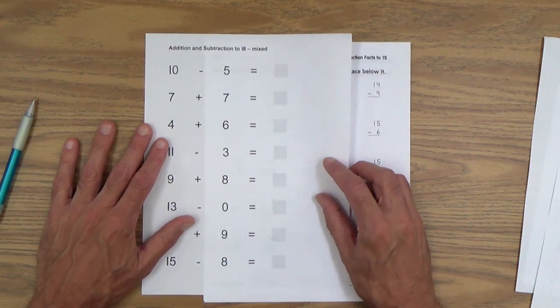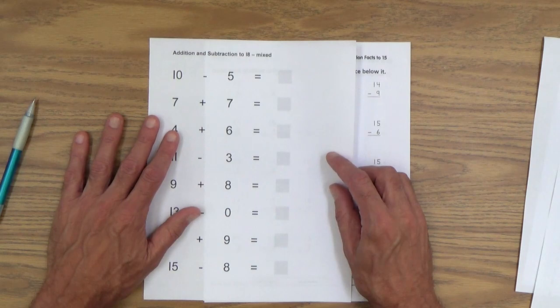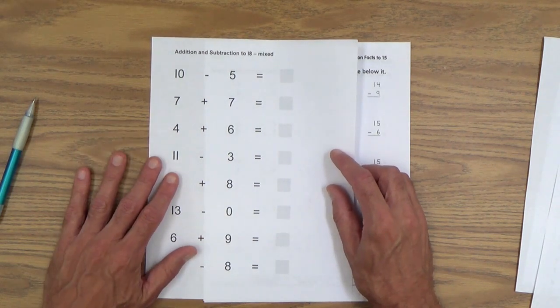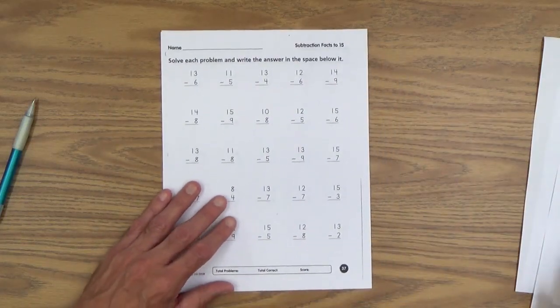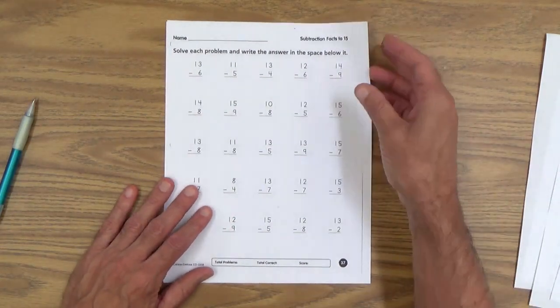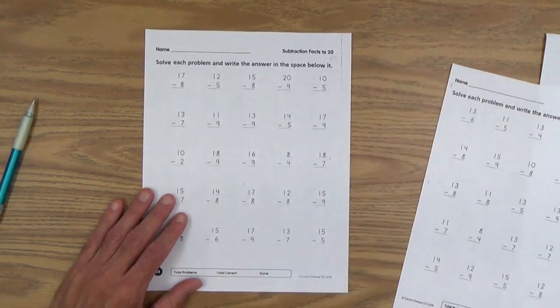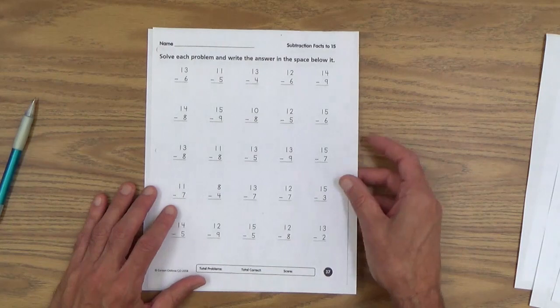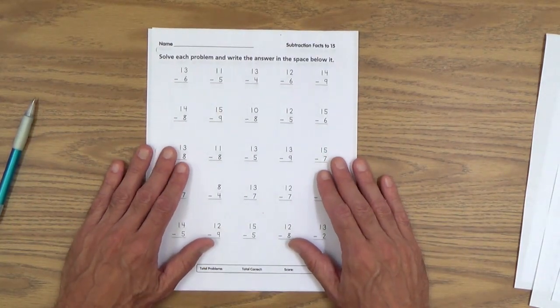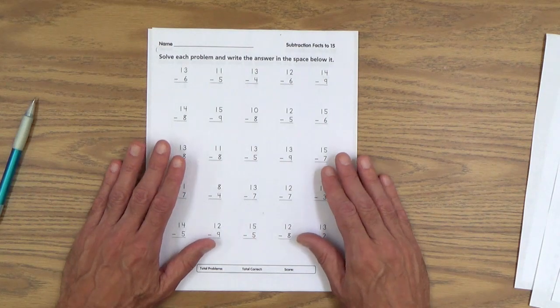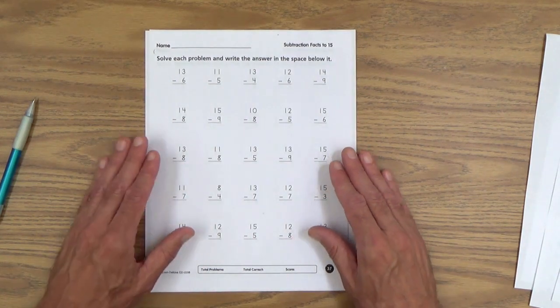And finally, a couple of practice sheets: subtraction facts to 15 and subtraction facts to 20. You can access these by going to lesson 35 on the early gifted manual. Okay, let's get started.